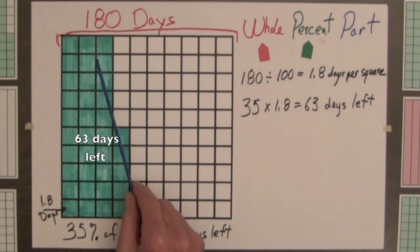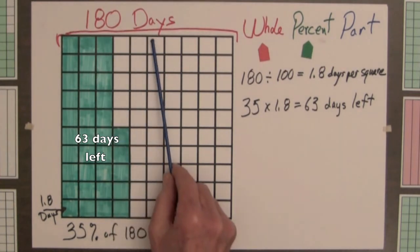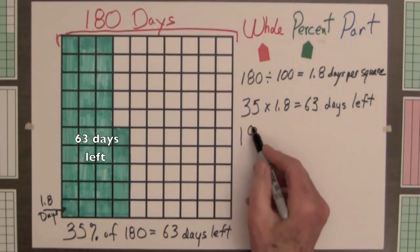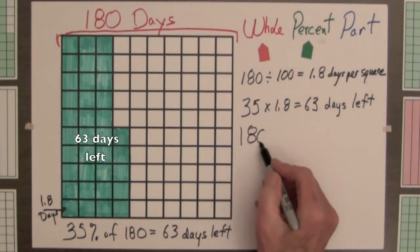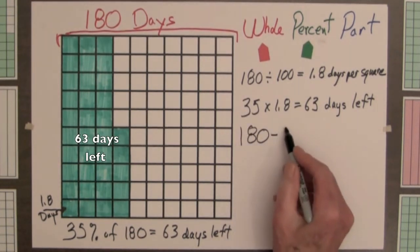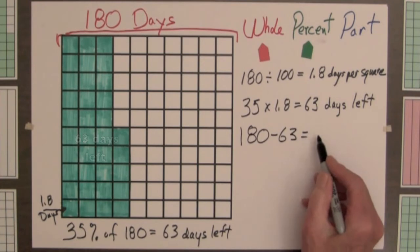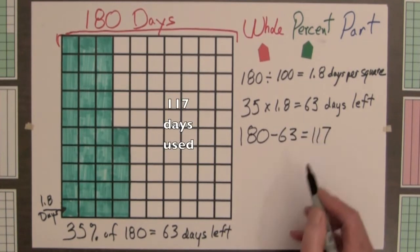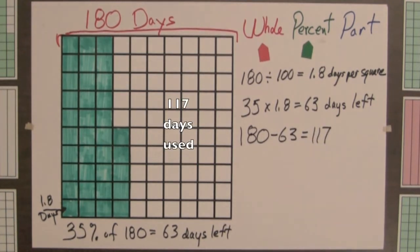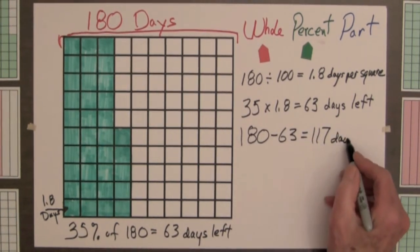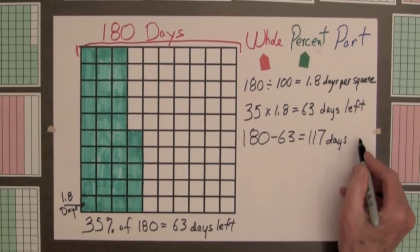The total number of days, 180, minus the 63 days left — 180 minus 63 — equals 117 days left.